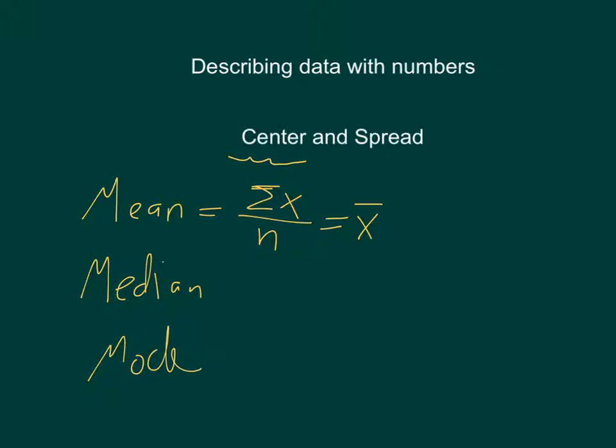The median does not have a special symbol that we usually use. But the median is what's called the middle value. All right, so if you list them lowest to highest, the middle number is the median. And then the mode is the one that happens the most often.